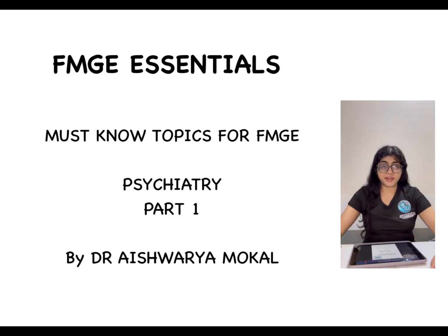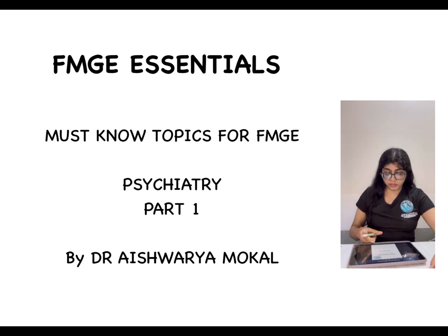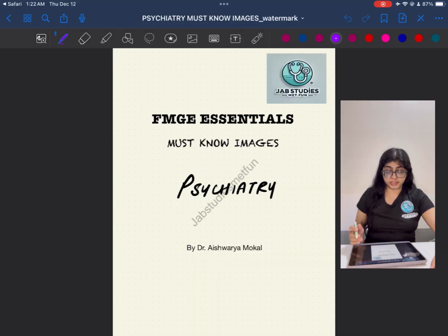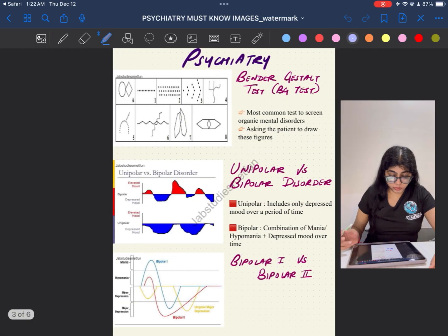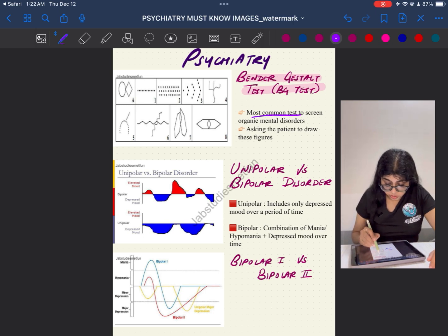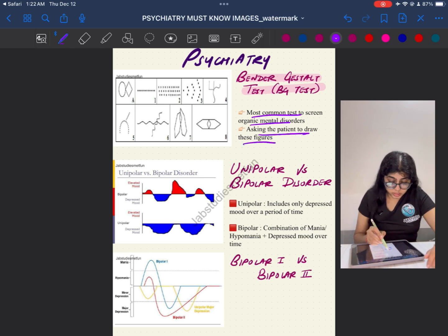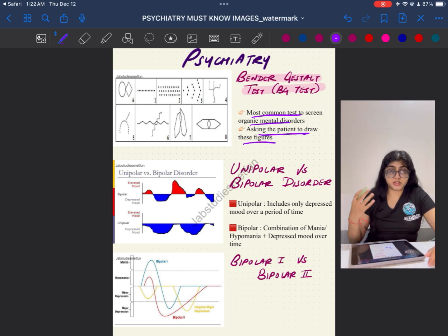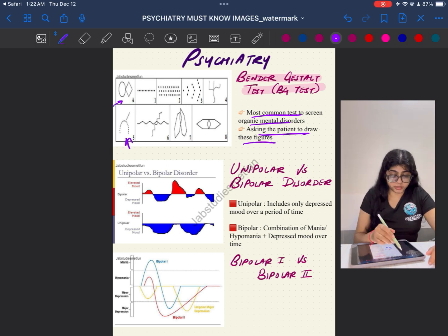Hello doctors, welcome back to Job Studies Med Fun. I'm Dr. Ashwarya Mokal and this is our video for must-know images of psychiatry. Very few images we have to go through, but these are most likely asked in the exam for psychiatry. First, we'll see the Bender Gestalt Test. The BG test is the most common test to screen organic mental disorders. The objective is asking patients to draw figures — hexagons, dotted structures, curvy structures, circles, triangles, circles, and squares.